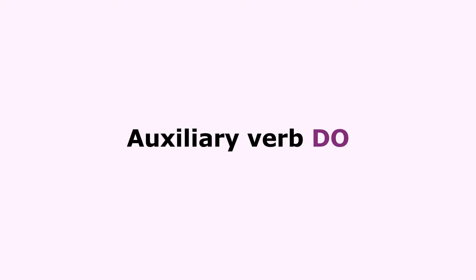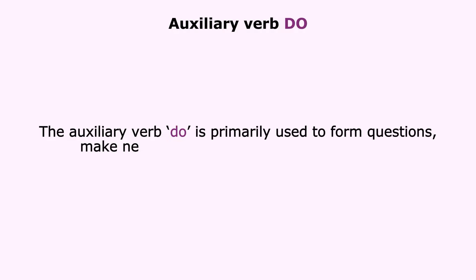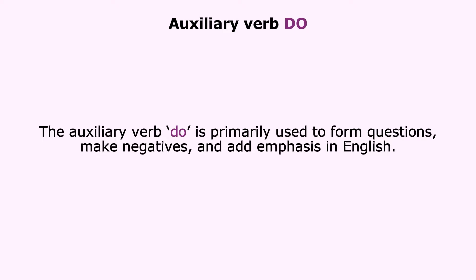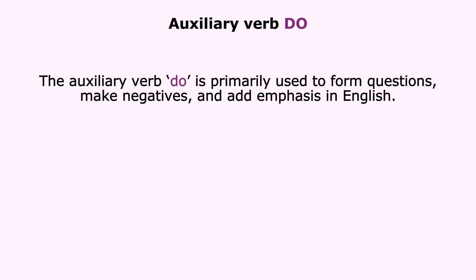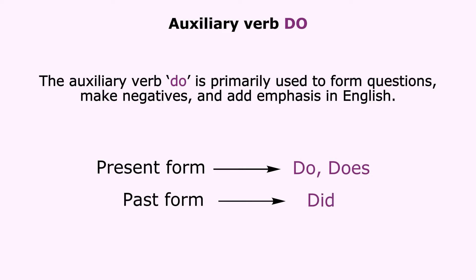We will continue with the auxiliary verb Do. The auxiliary verb Do is primarily used to form questions, make negatives and add emphasis in English. Its forms include: present form — do, does; past form — did, depending on the tense and the subject.